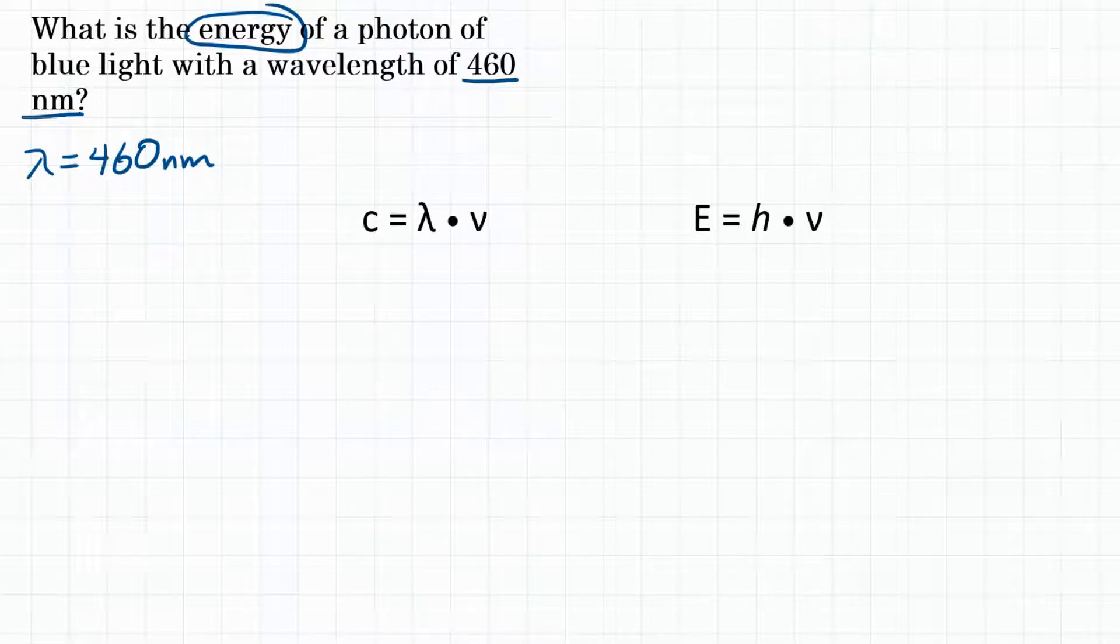And we are looking for energy, that is what we want in the end. For this problem, we're going to need two equations. The first equation is where the speed of light, which is C, is equal to wavelength times frequency. We were given wavelength, and the speed of light is a constant we know. Using those two values, we're going to solve for frequency. Then we're going to take that frequency and plug it in a second equation, where we know Planck's constant. Using those two, we're going to solve for capital E, which is energy.